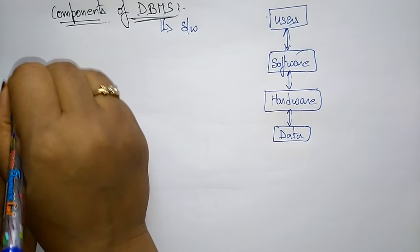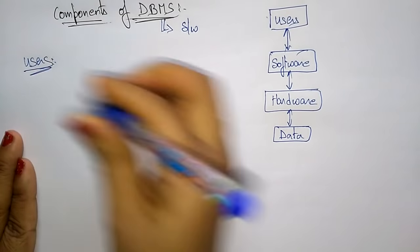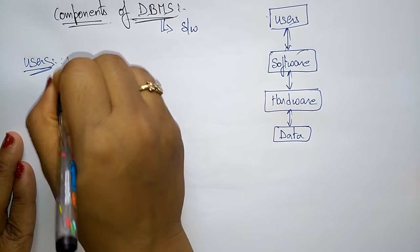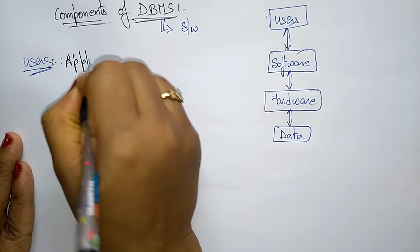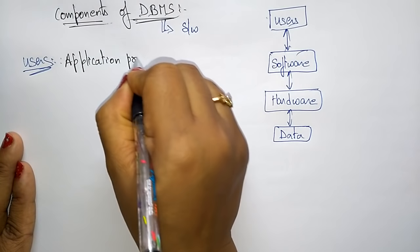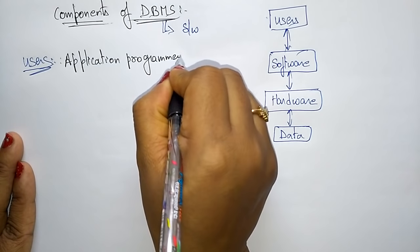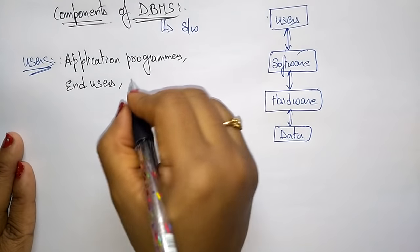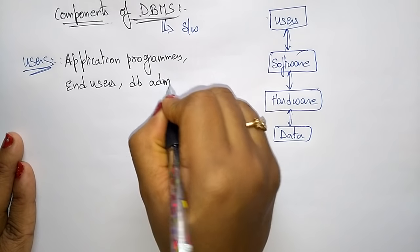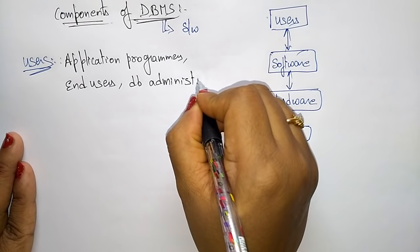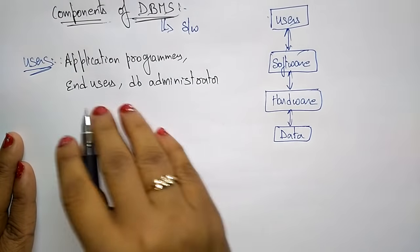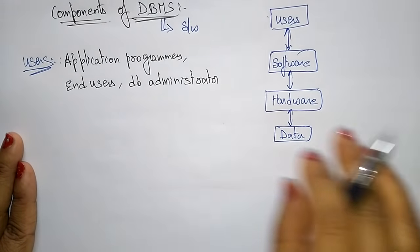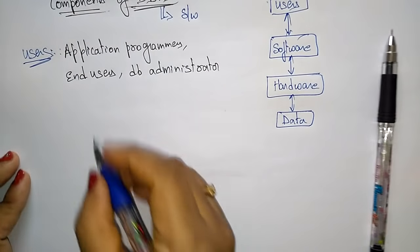So what are the users here? Users are nothing but application programmers who implement applications, or you can call them end users, or also the database administrator — the person who is managing the database in a company. So the user may be the application programmer, the end user, or the database administrator.